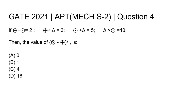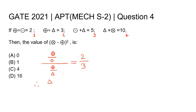First, let's give each equation a number. Let's divide equation 1 by equation 2. Therefore, triangle is equal to 2/3 of circle-with-dot.